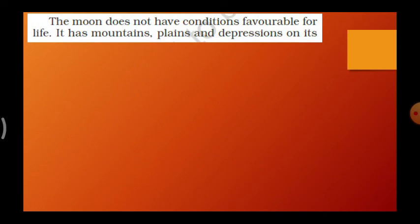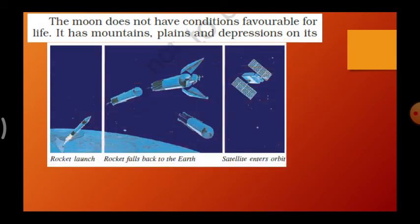The Moon does not have conditions favorable for life, so we cannot live there. It has mountains, plains, and depressions on its surface. Looking at this picture: the first image shows a rocket launcher, the second shows the rocket falling back to Earth, and the third shows the satellite entering orbit. This is how a rocket launch and satellite entry happens.